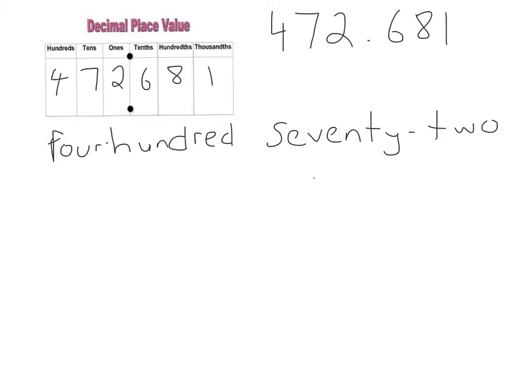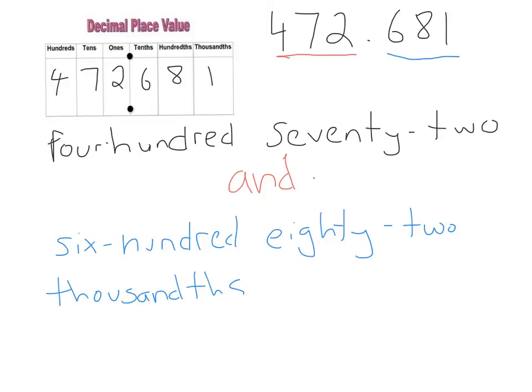Decimal place value charts also help you when we're pronouncing our numbers with decimals. You shouldn't be using the word AND when you're talking about whole numbers — for example, with 472, I shouldn't say four hundred AND seventy-two; I should just say 472. Where we do use the word AND is between our whole numbers and our decimals. So here we have 472 AND 488 thousandths.